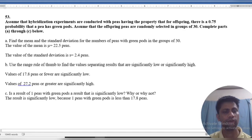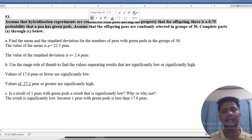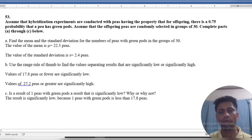Here is the question. Assume that hybridization experiments are conducted with peas having the property that for offspring there is a 0.75 probability that a pea has green pods.